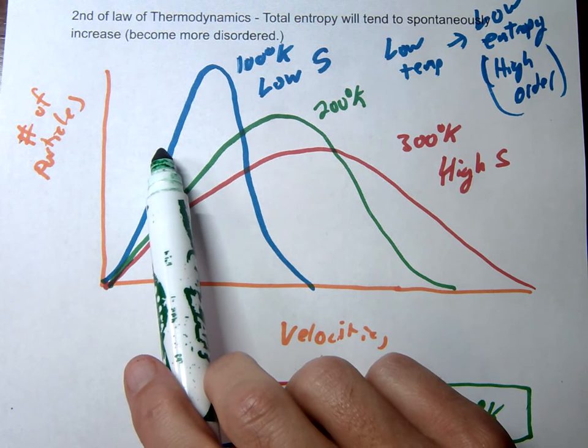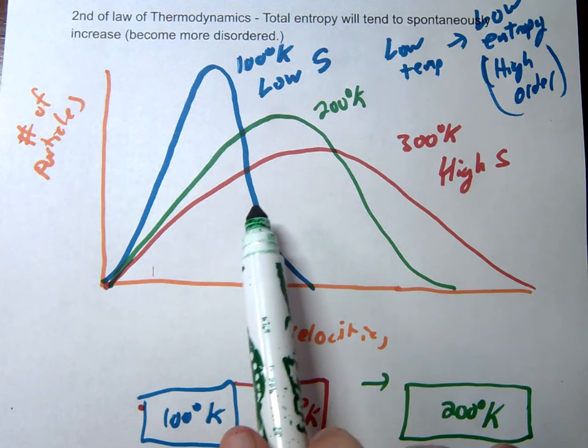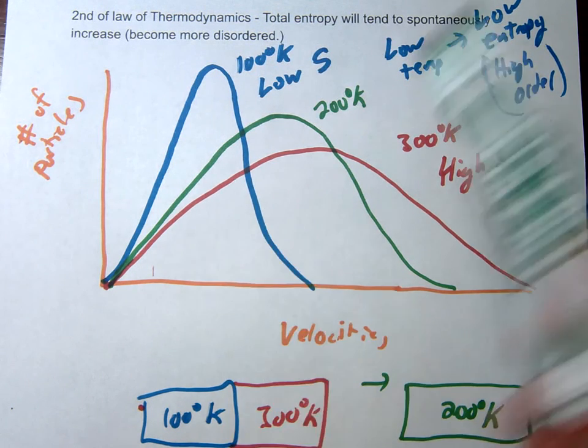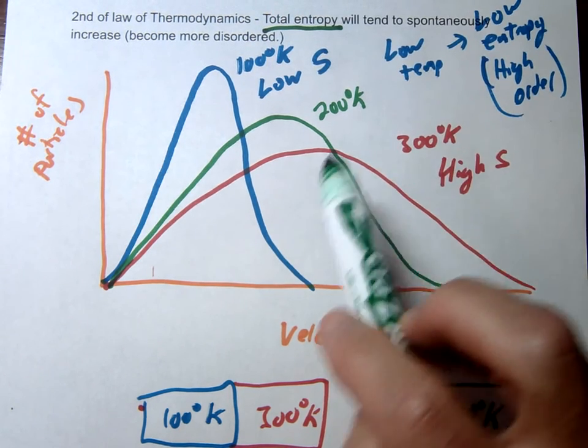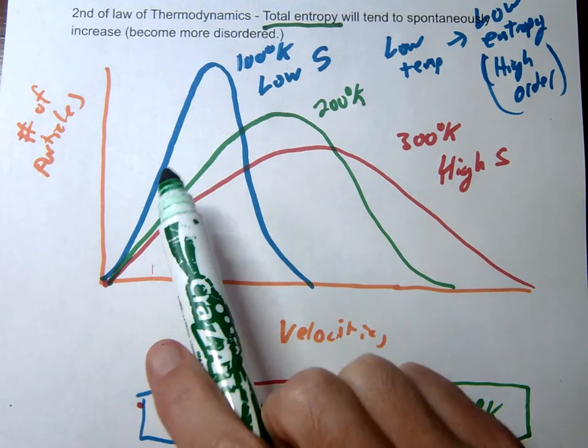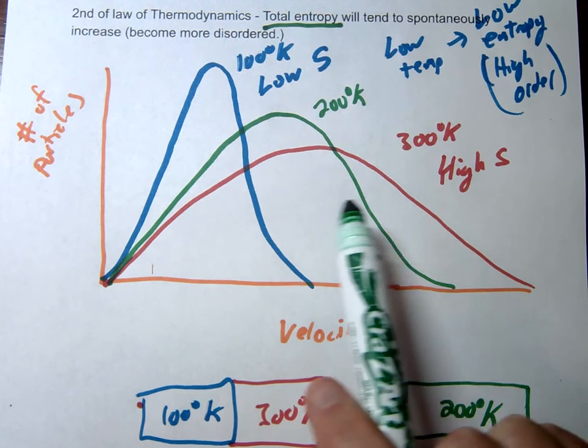However, the entropy increased for the blue, for the cold temperature. So the thing I want you to notice is the total entropy for the whole system is going to be increasing. So in other words, even though this is going to be increasing entropy and this is going to be decreasing entropy, the whole system combined is actually going to move towards a state of increasing entropy.